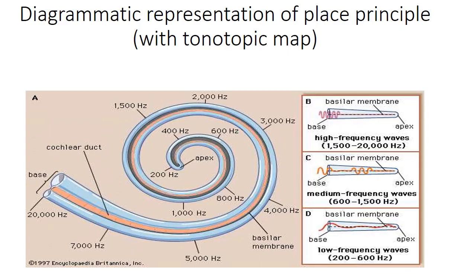This is another diagrammatic representation of the place principle with a tonotopic map. The tonotopic map shows the apex of the cochlea where low frequency sounds stimulate the basilar membrane, and the base of the cochlea where high frequency sounds are stimulated. High frequency sound travels only a short distance and dies off. Medium frequency sound reaches the middle of the basilar membrane and then dies off. Low frequency sound can travel the whole length of the basilar membrane.